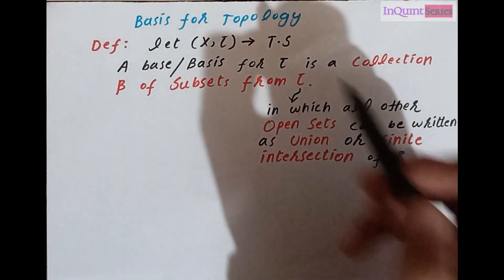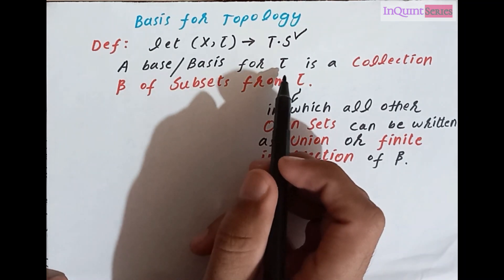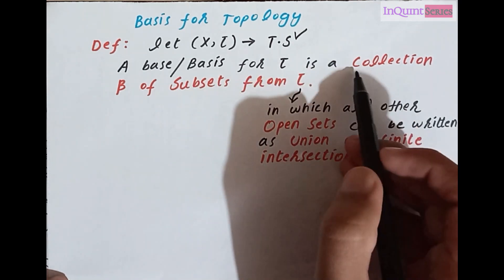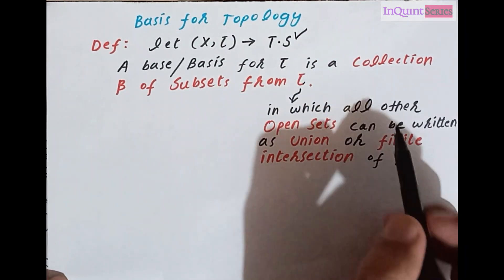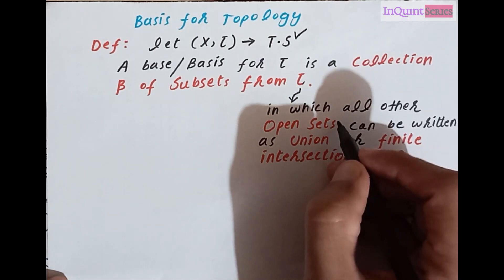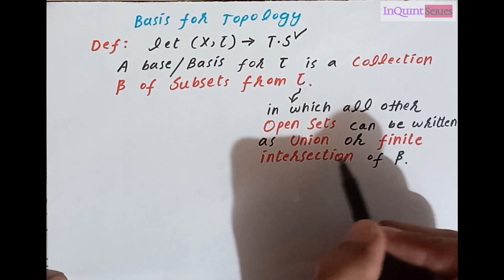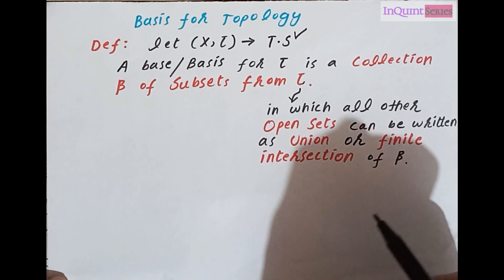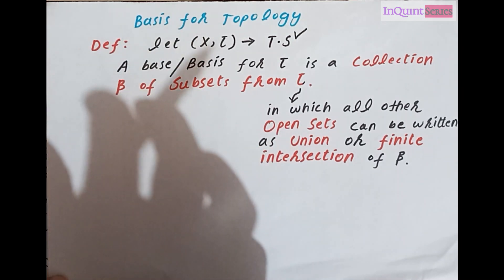Let x and tau be our topological space. A base, or we can say basis, for tau is a collection beta of subsets, where that collection beta is from the topology tau, in which all other open sets belonging to tau can be written as the union or finite intersection of elements of beta.